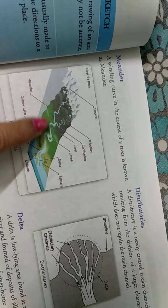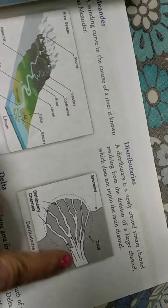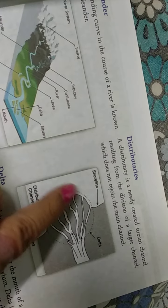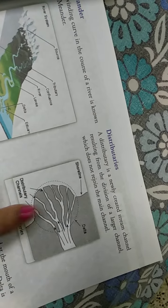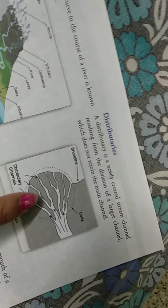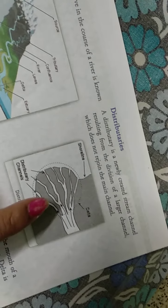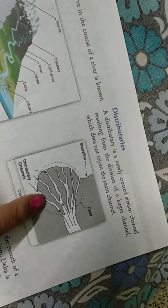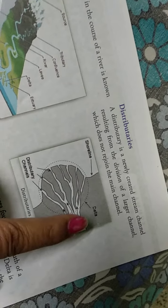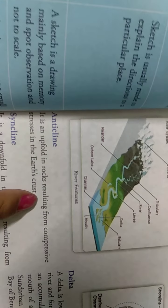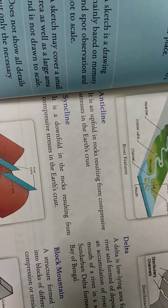Distributaries. If this is the main river, the one that is coming out from it is known as distributaries. A distributary is a newly created stream channel resulting from the division of a large channel. From that large channel, small channels have come out. These are known as distributaries. Anticline is an upfold of rocks resulting from compressive stress of the earth's crust. This is anticline.